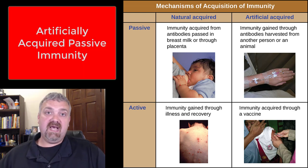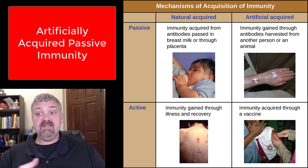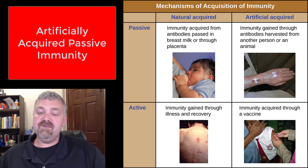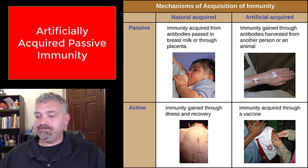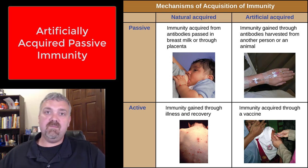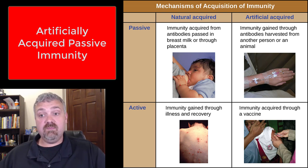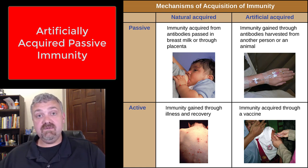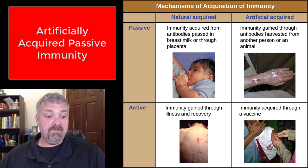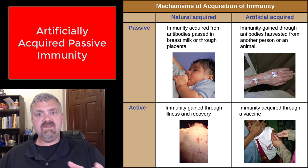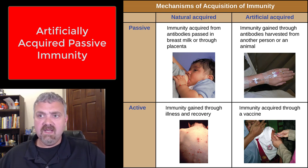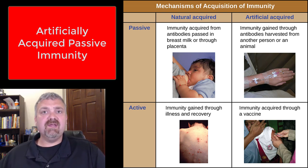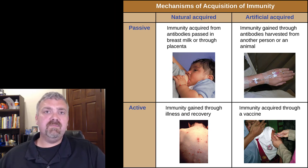Next we have artificially acquired passive immunity. This is where you're given antibodies through a medical intervention — antibodies harvested from a person or an animal and given to you. Think about movies like The Hot Zone, where they get antibodies from a monkey and give them to humans to save them. Or with the relatively recent Ebola outbreak, getting antibodies from someone who survived Ebola and giving them to people who have Ebola. Antibody therapies can be used in lots of situations. That is artificially acquired passive immunity.